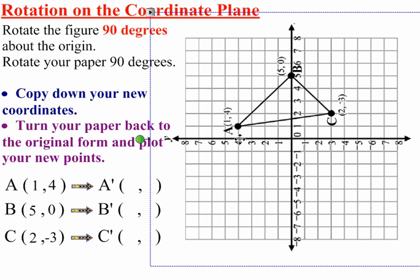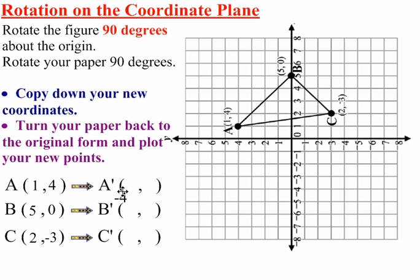from the origin you're going to go to the left 4. Going to the left 4 is always negative, so it's a negative 4. Going up 1 is positive, so the A prime will be negative 4, 1.